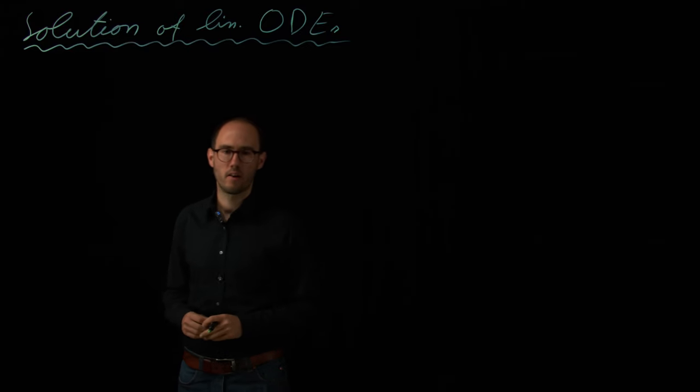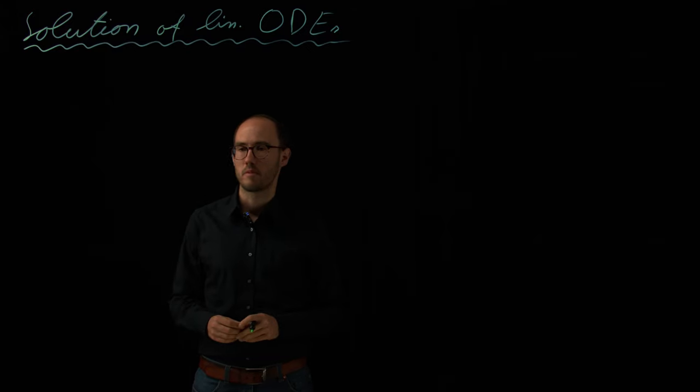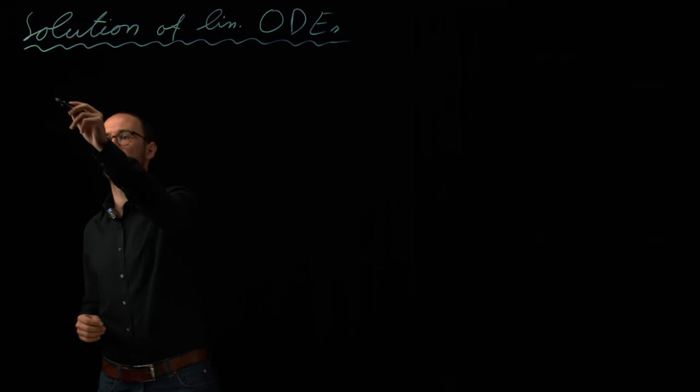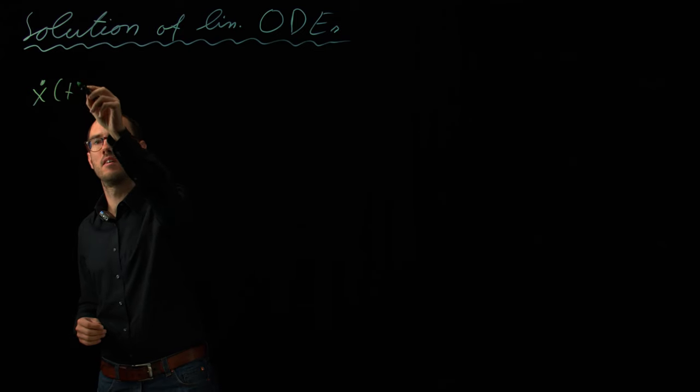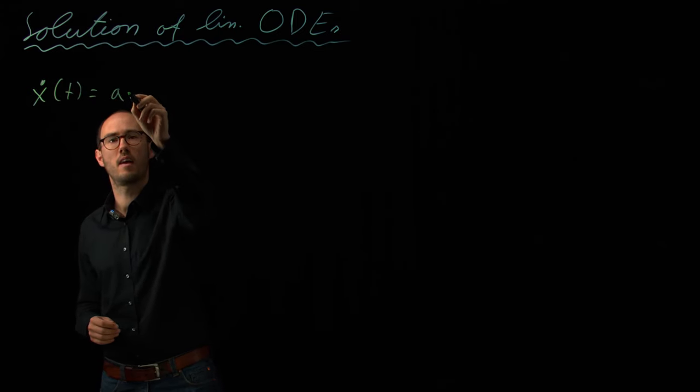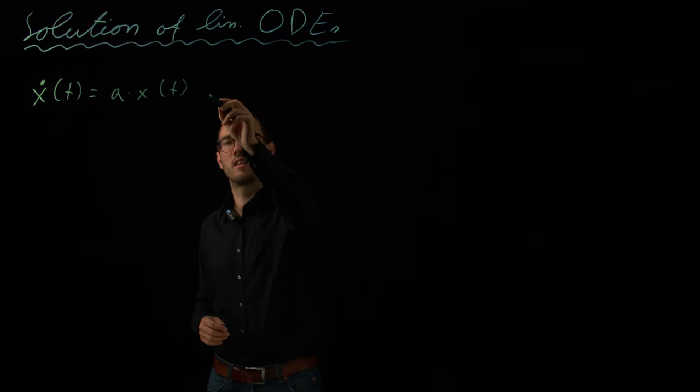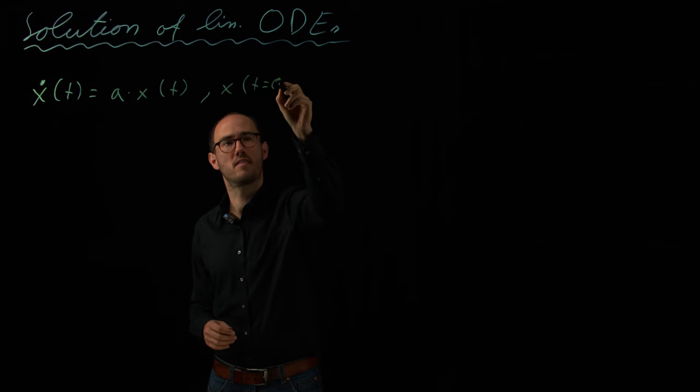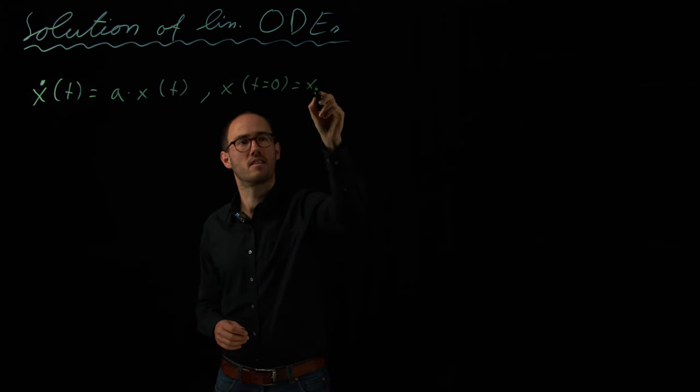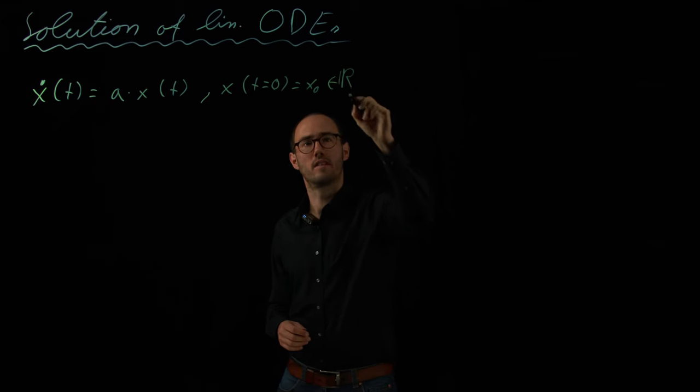Hello, everyone. Today we're going to handle the solution of linear ODEs and we start with the simplest case. The linear ODE, which is scalar, so we have x dot of t is equal to A times x of t, giving some initial condition x of t at time 0 is x0, which is some real number.